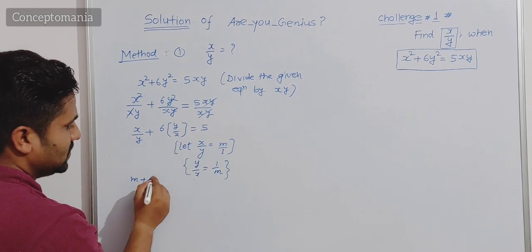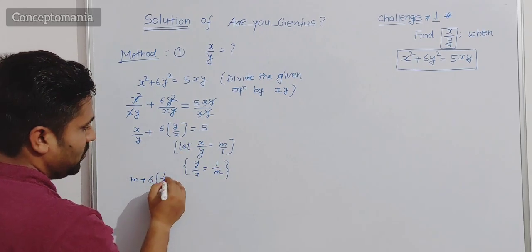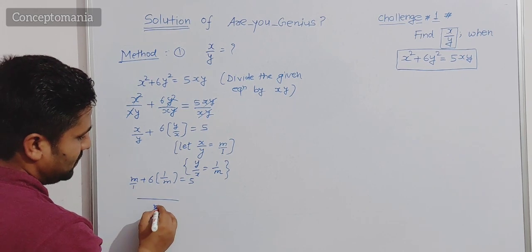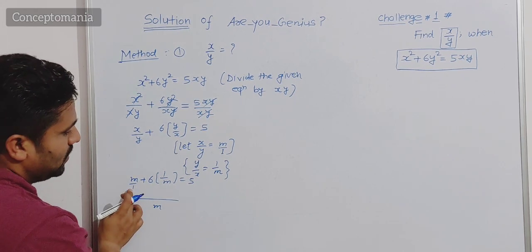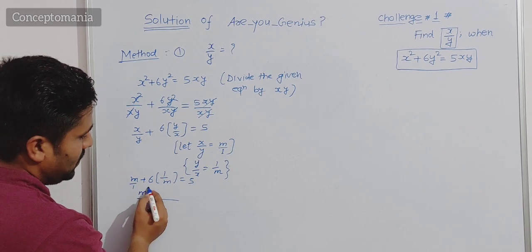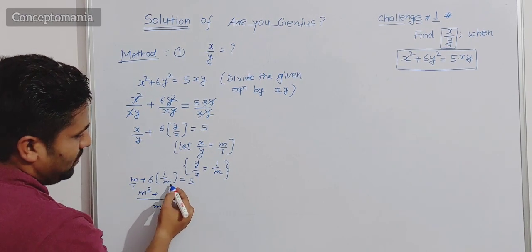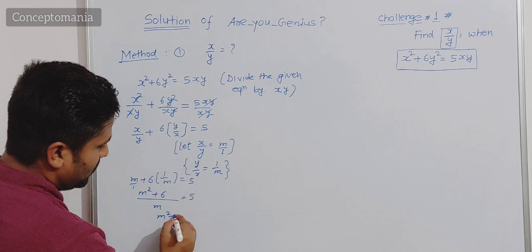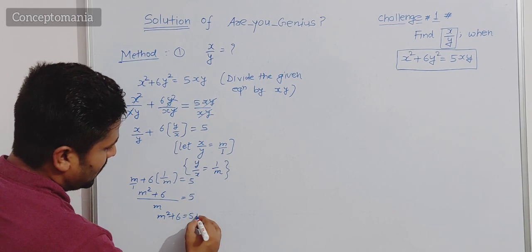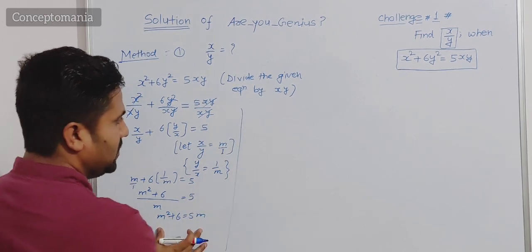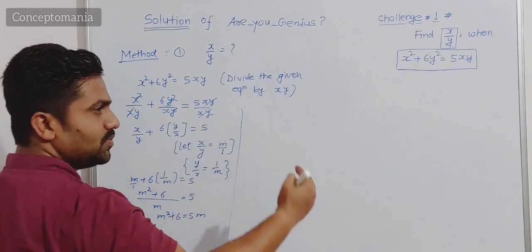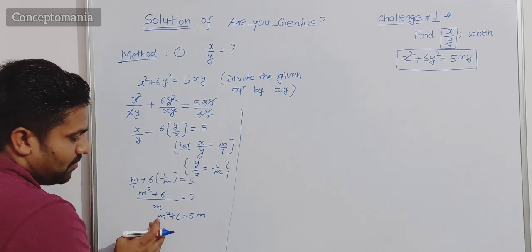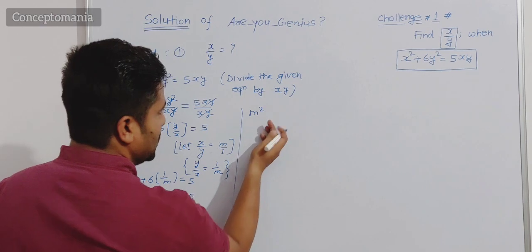Substituting in the equation: m plus 6 into 1 upon m is equal to 5. Taking LCM as m: m squared plus 6, divided by m, equals 5. Cross multiplying: m square plus 6 is equal to 5m. Now arranging in standard quadratic form — highest power to lowest power — we get m square minus 5m plus 6 is equal to zero.